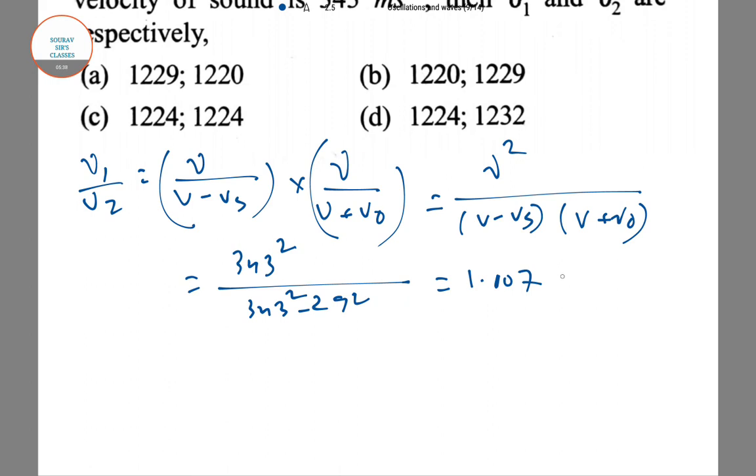If you compare with the options here, you have to calculate everything separately. The closest one is 1229/1220. So the option in this case is A.